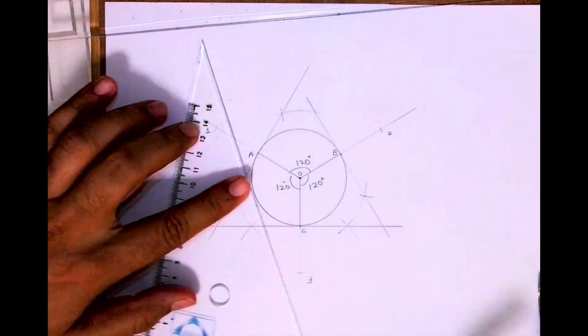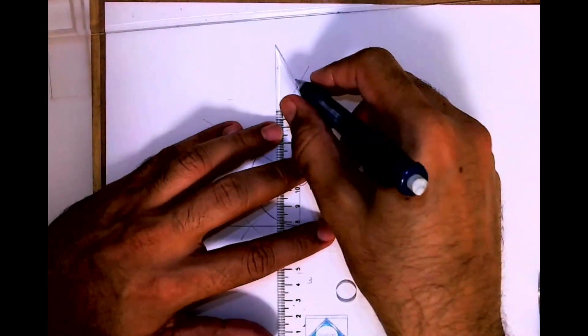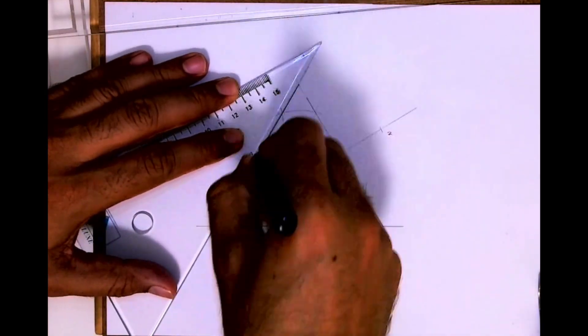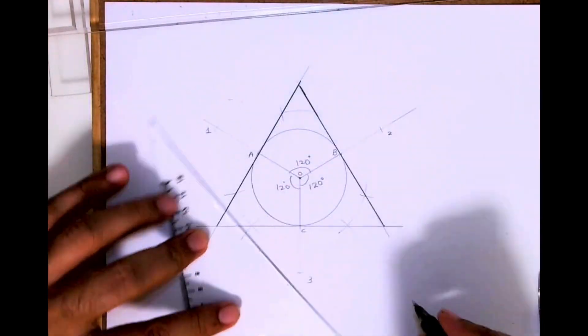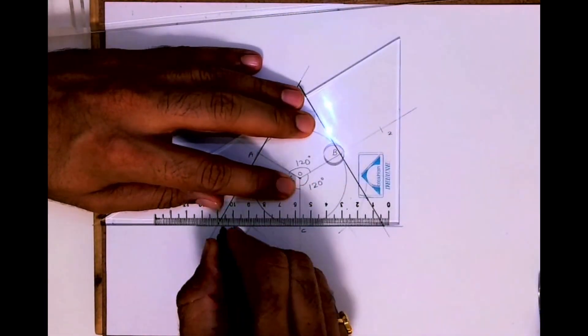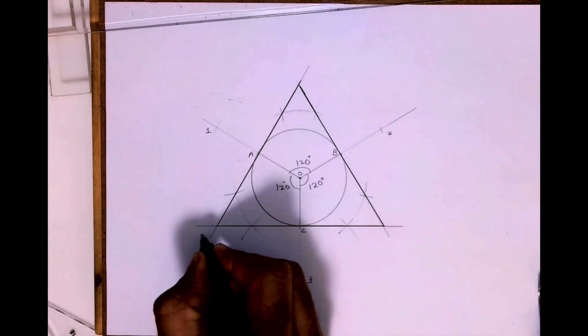And you've got three sides, so you've got triangle. So we have done triangle outside a circle. I hope you people have understood this. Thank you.